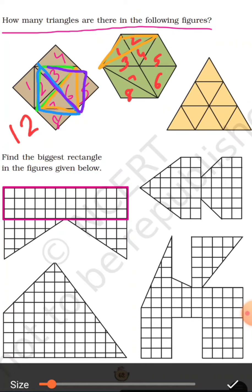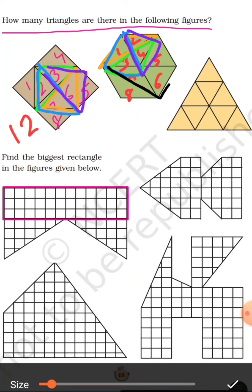Combine 3 and 4 to get another triangle — that becomes 10. Aap ne 1 and 3 ko count karna hai, to aap ke paas 11 triangle. Now combine 2 and 4 — that is triangle 12. Then the biggest triangle visible in the figure is 13.